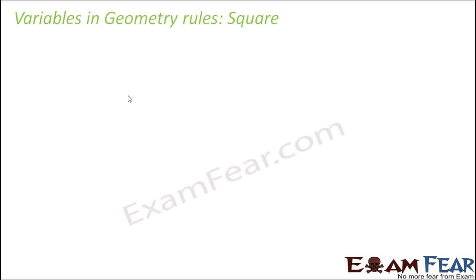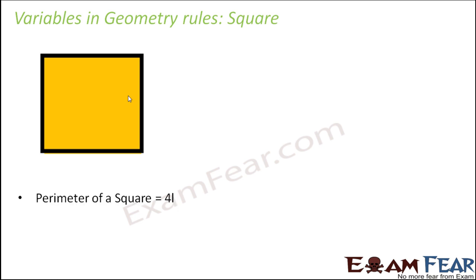For example, let's look at a square. Now by now we have all learned about how to find out the perimeter of a square, that is the total length of the boundary. So how do we find the perimeter? Perimeter is equal to the sum of the four sides.